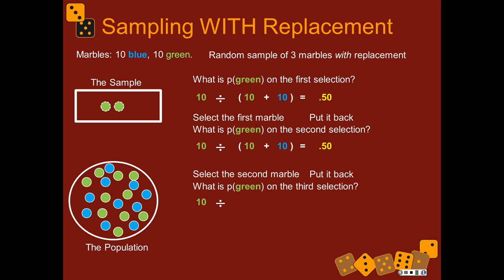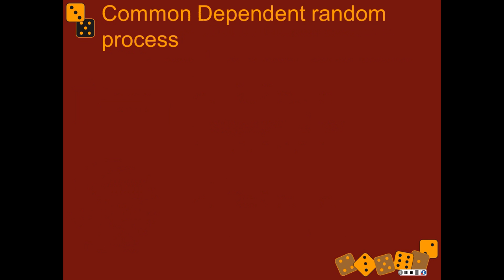It's the same, because there are still ten green marbles in there. We select the third marble — it was blue this time — and put it back. The point is that the probability of picking a green on the second selection didn't change no matter what happened on the first selection, and the third selection was not changed by the first and second selections. Each selection was independent of the other selections.